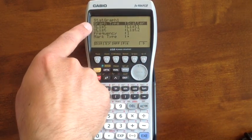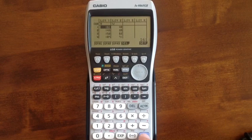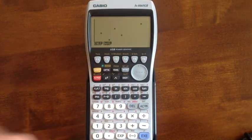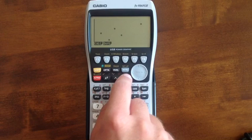Scatter graph, taking x from list one, y from list two, pressing graph one, because that is the type of graph we've set up. There you go, there's a little scatter graph. Again, not massively useful.